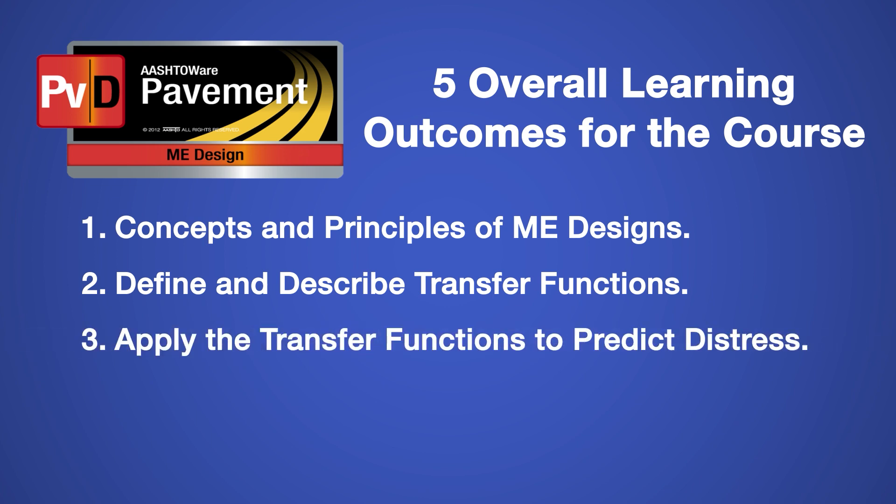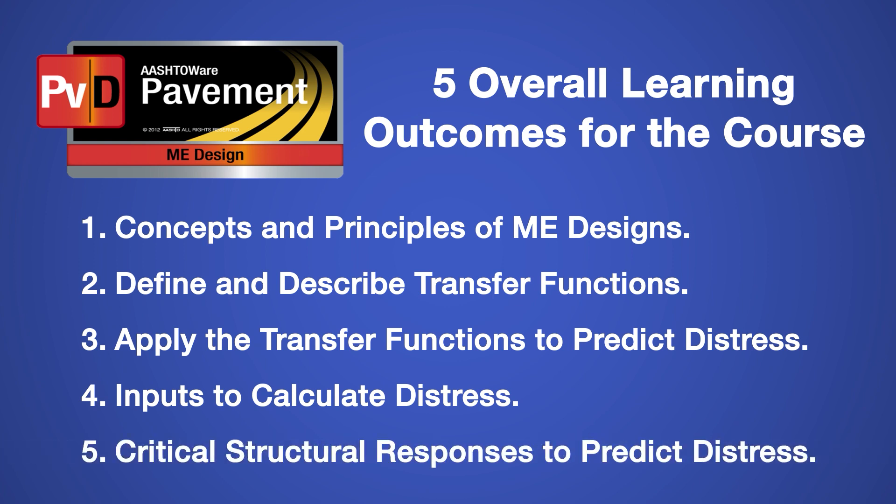The third learning outcome is to describe how to apply the transfer functions for predicting pavement distress and using the outcomes for designing pavements. This includes understanding reliability and the importance of the standard error of the estimate that influences the performance prediction and final design solution in terms of cost and constructability. The fourth is to identify and list the inputs that have a significant effect on the calculated damage and distress. The fifth is to identify critical structural responses for predicting pavement distress.